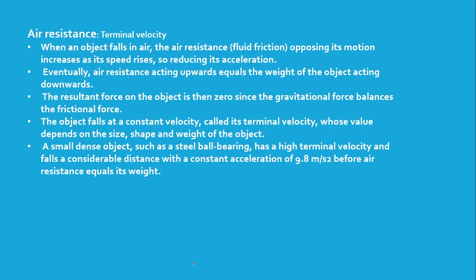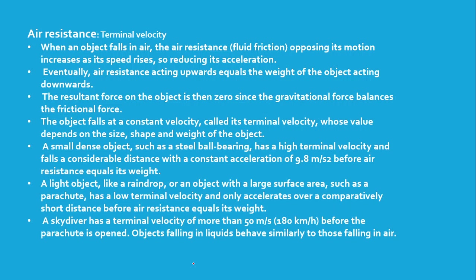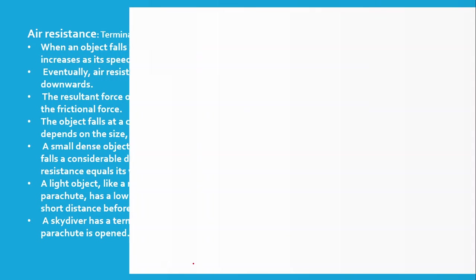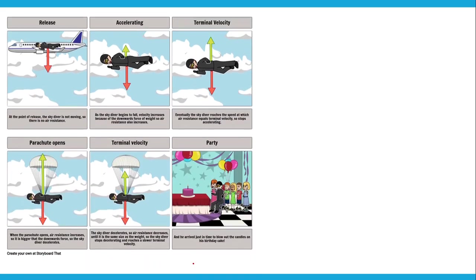The value of terminal velocity depends on the size, shape, and weight of an object. A small dense object like a steel ball bearing has a high terminal velocity and falls a considerable distance with constant acceleration of 9.8 m/s² before air resistance equals its weight. A raindrop or object with a large surface area like a parachute has a lower terminal velocity and only accelerates over a short distance. A skydiver has a terminal velocity of more than 50 meters per second before the parachute opens.